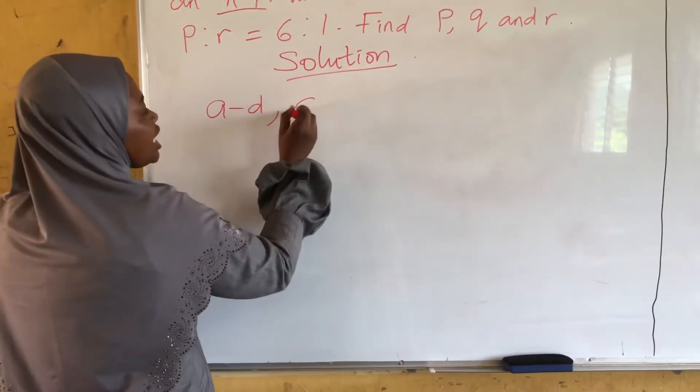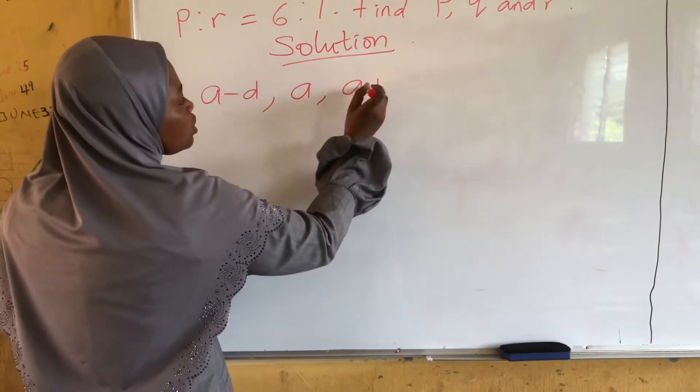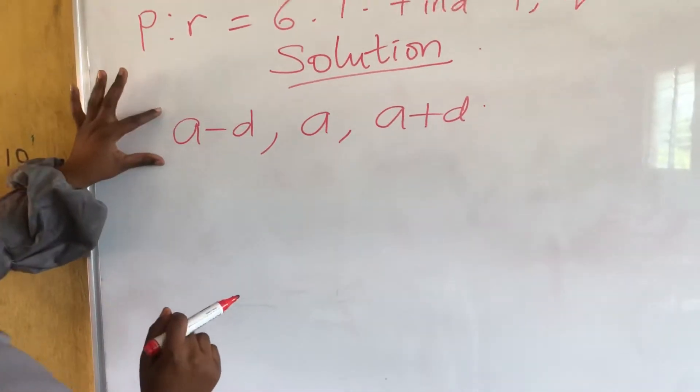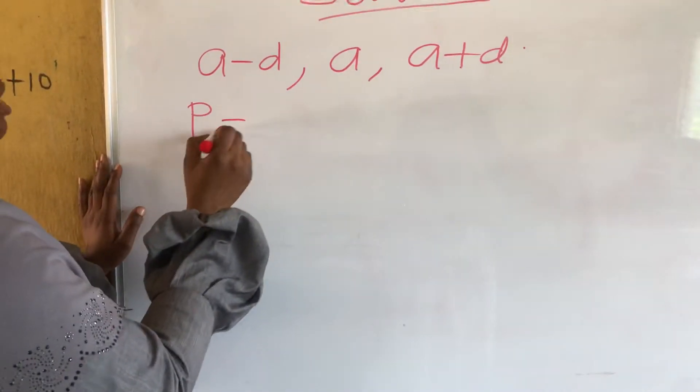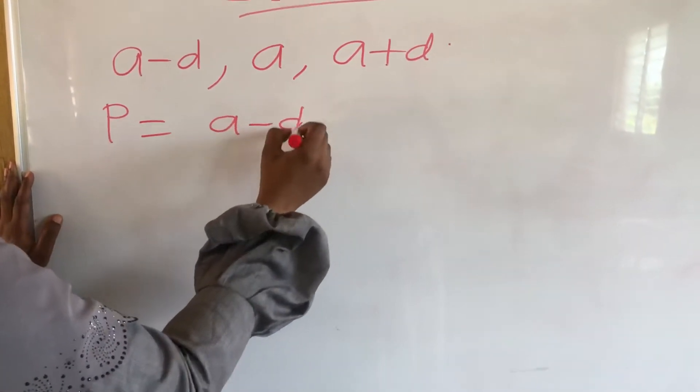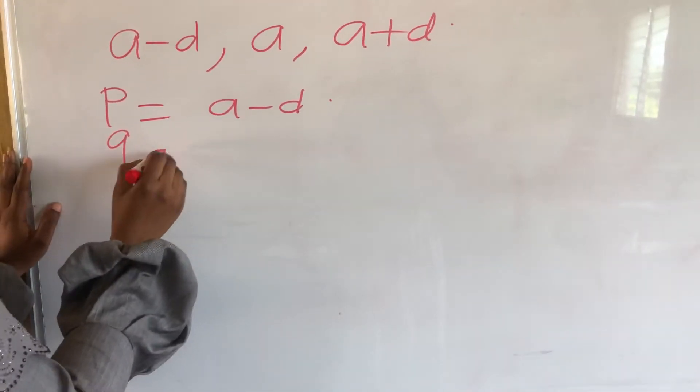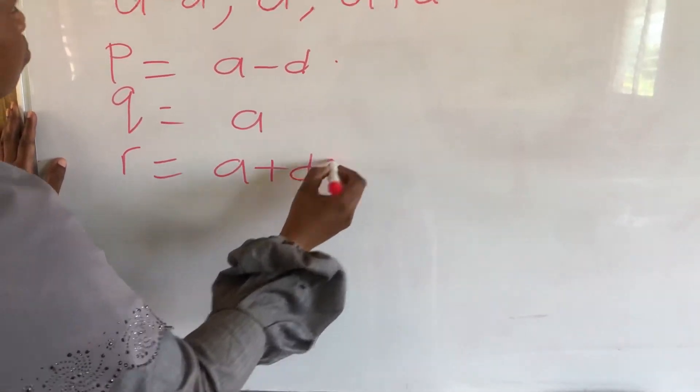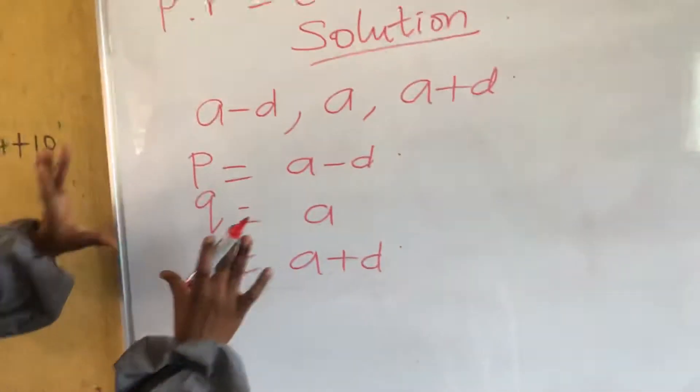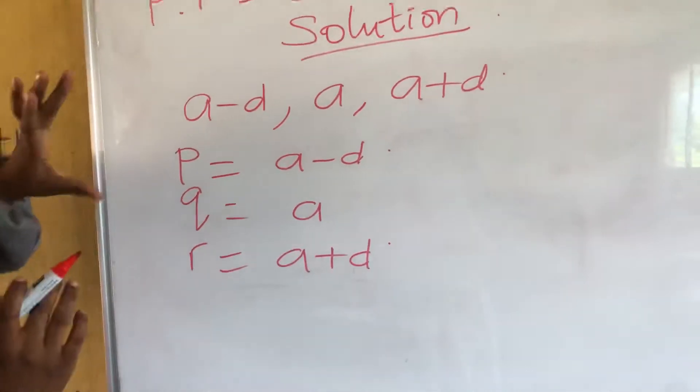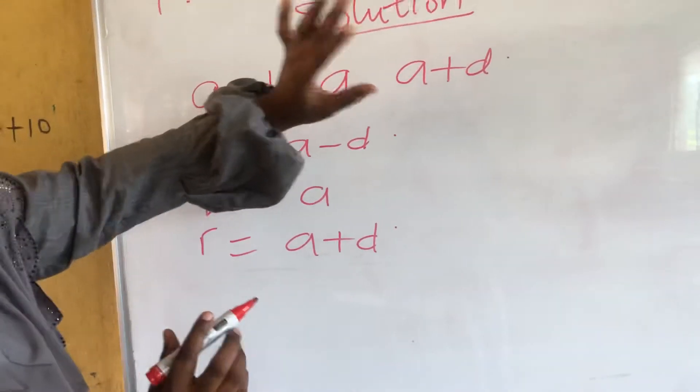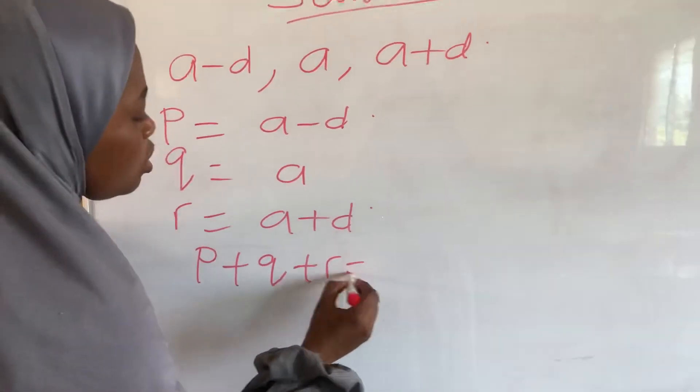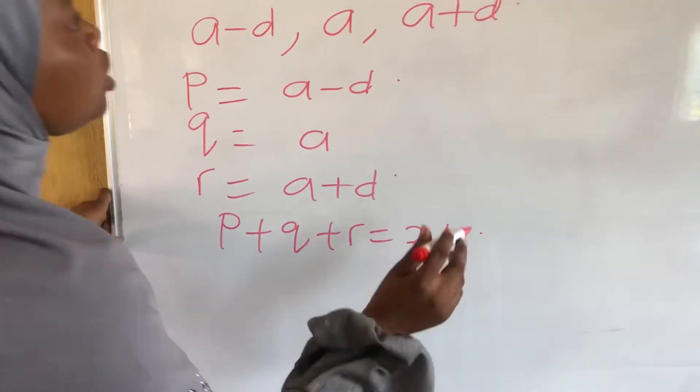Now, it means that P is equal to A minus D, and Q is equal to A, then R is equal to A plus D. So, let's note this one. And their sum is 21, so P plus Q plus R is equal to 21. Note that one.